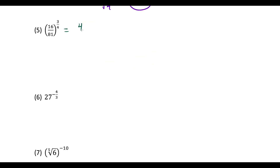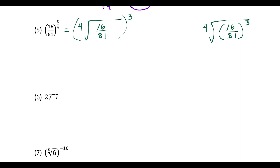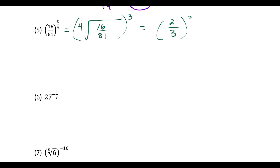For question 5, using power over root, we rewrite as the fourth root of (16/81) raised to the third power. This approach lets us simplify without a calculator: the fourth root of 16 is 2 and the fourth root of 81 is 3. We raise that result to the third power — 2 to the third over 3 to the third — giving us 8 over 27.